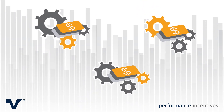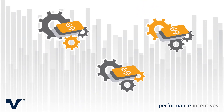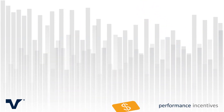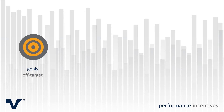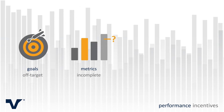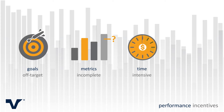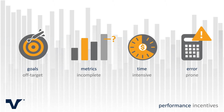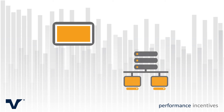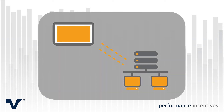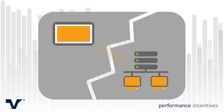Incentive compensation programs have a lot of moving parts and can be difficult to manage. Plans are off-target or never were aligned with goals. Metrics are incomplete, limited by system capabilities. Manual tracking is time-intensive and accounting is error-prone. Many other solutions address key tasks but do not connect to enterprise systems. Plain and simple, traditional approaches lack the comprehensive functionality you need to be efficient and effective.